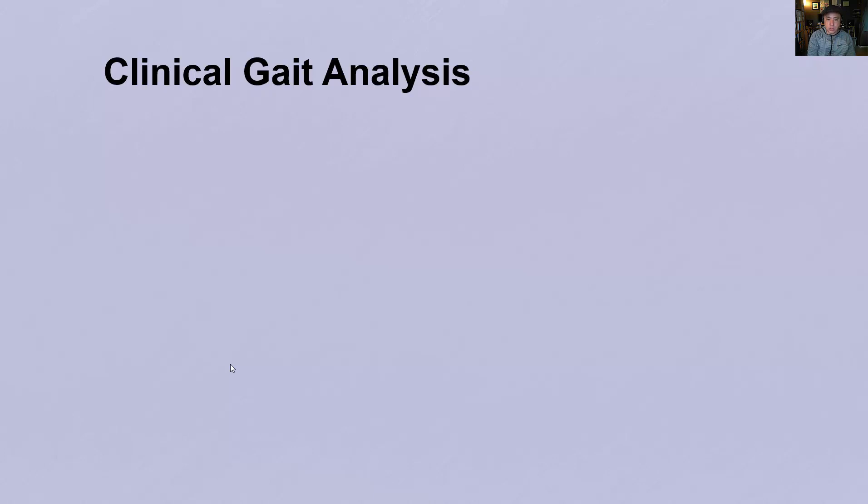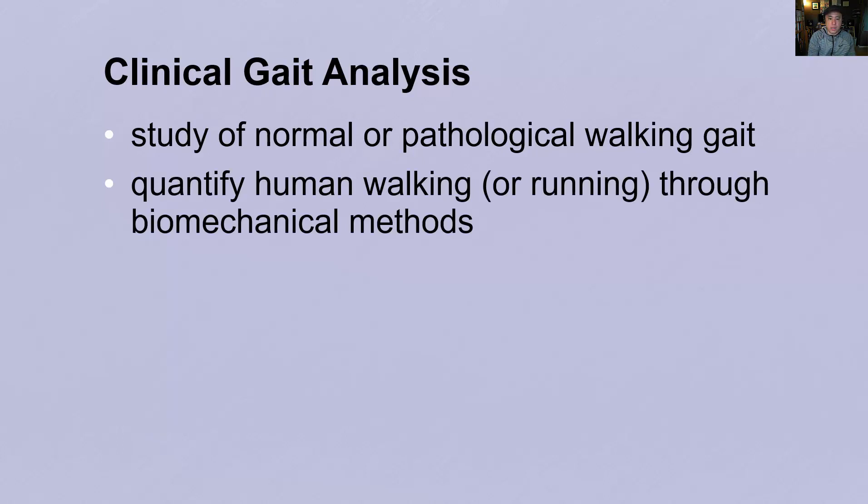So what is clinical gait analysis? I'm sure you've heard the term gait, which is used to describe the pattern of walking or running. Clinical gait analysis is the study of normal or pathological walking gait. Pathological walking gait is any condition which prevents a patient afflicted by a neuromuscular disorder from walking normally. Clinical gait analysis is a method used to quantify the kinematics of walking or running using biomechanical techniques.